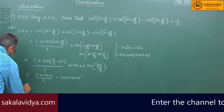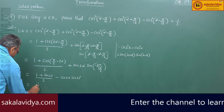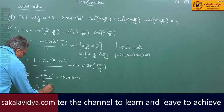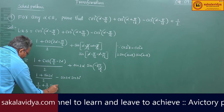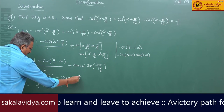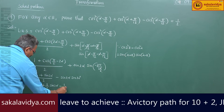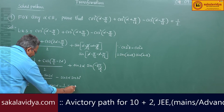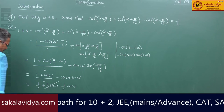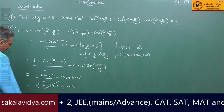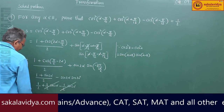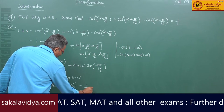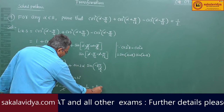So this can be rewritten as half plus half sin 2 alpha. Since sin 30 is also 1 by 2, we get (1 by 2) sin 2 alpha plus (1 by 2) sin 2 alpha minus (1 by 2) sin 2 alpha. These cancel and we are left with 1 by 2, which equals the RHS. Hence proved.